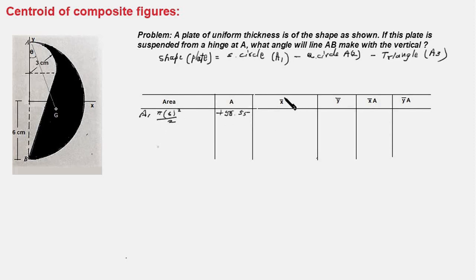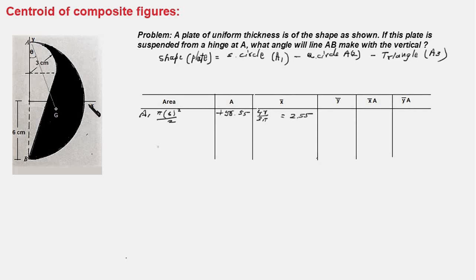The x-coordinate of the centroid is x̄ and the y-coordinate is ȳ. For a semicircle, x̄ = 4r/3π. Putting in r = 6, this works out to 2.55. And ȳ would be 0 because the centroid of this semicircle falls on the x-axis centerline. So x̄·A = 144.20 and ȳ·A = 0.